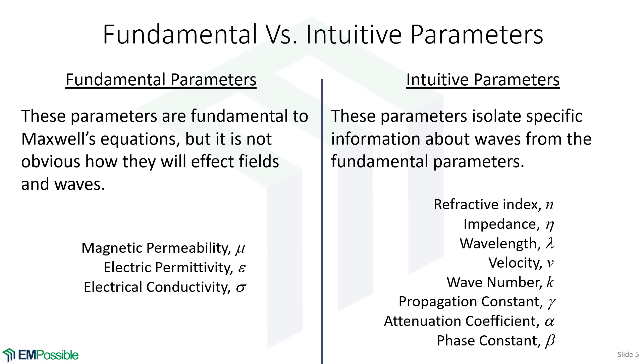And we would need to calculate those from the fundamental parameters. But given these intuitive parameters, like, for example, attenuation constant, that isolates everything about loss from mu, epsilon, and sigma all together into one parameter. And so that's why these are very nice.